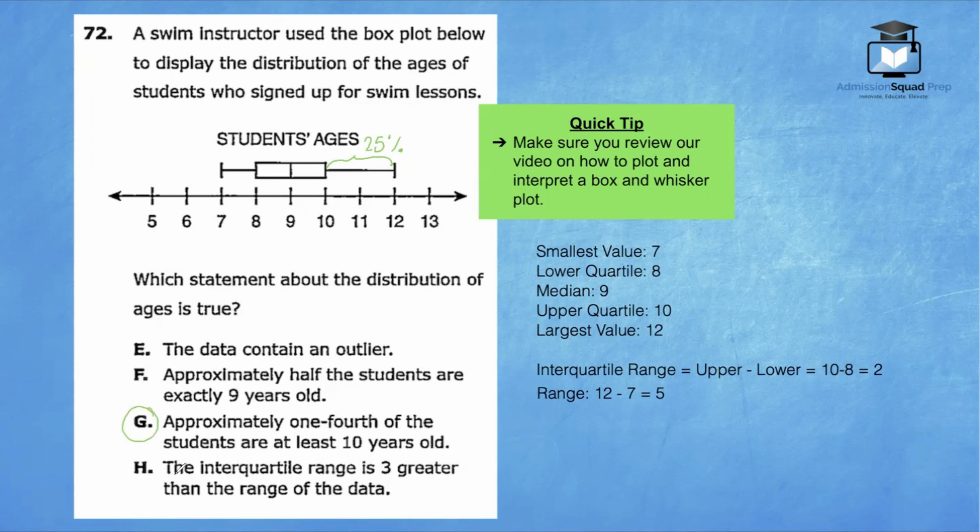Let's review answer choice H. The interquartile range, which is two, is three greater than the range of the data. And you can see that that's not correct. The interquartile range is three less than the range of data. So E, F, and H are definitely incorrect.